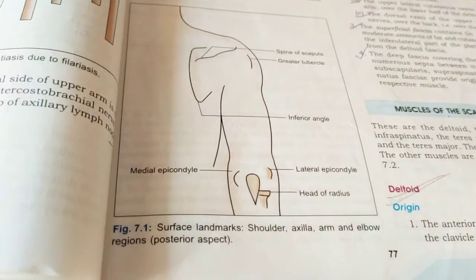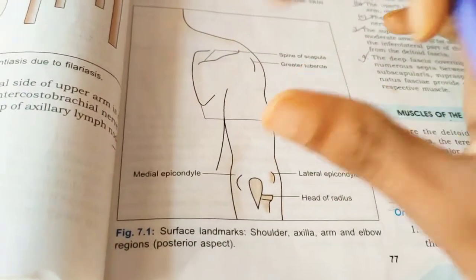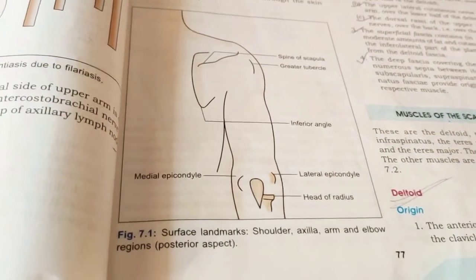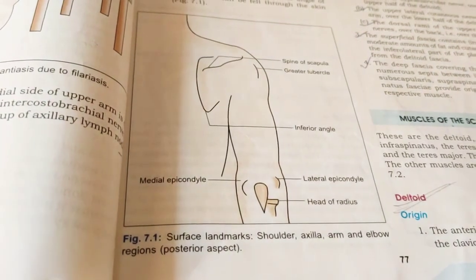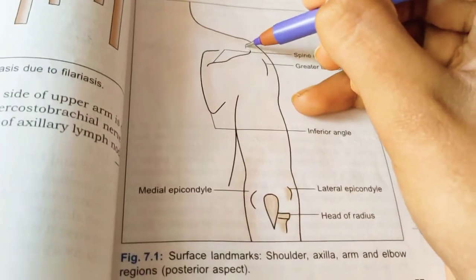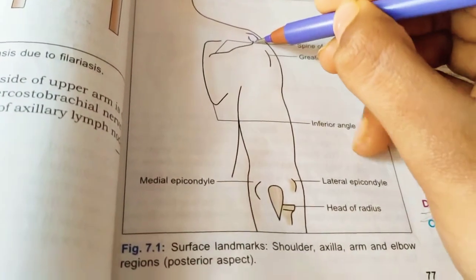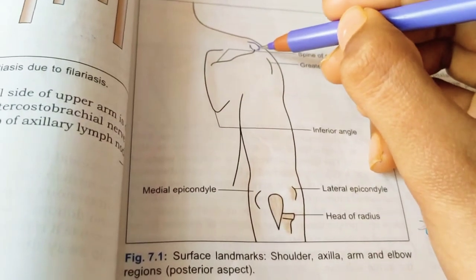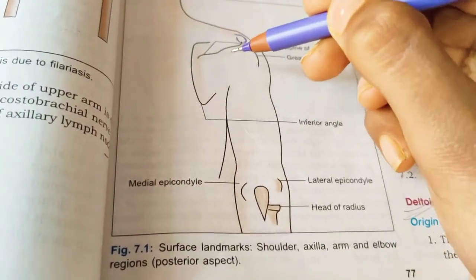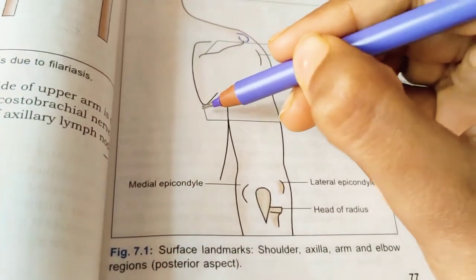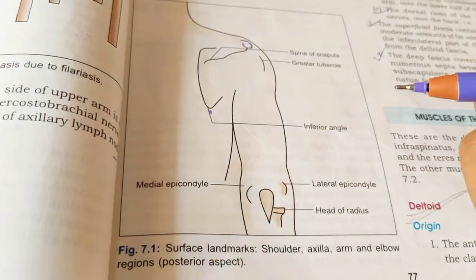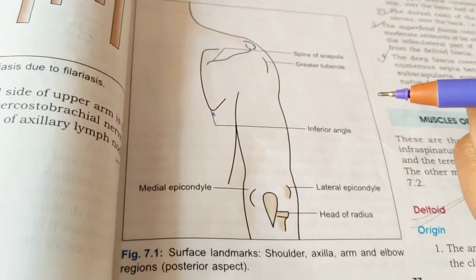Let us check out the bony landmarks which are palpable in the scapula. You can also check them out on a friend by palpating them, which will be very useful. Starting with the acromion — the acromion is palpated, and also the crest of the spine, the medial border, the lateral border, and the inferior angle of the scapula are all felt through the skin as they are subcutaneous structures.